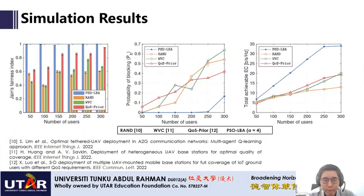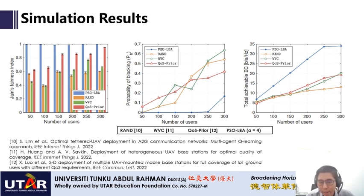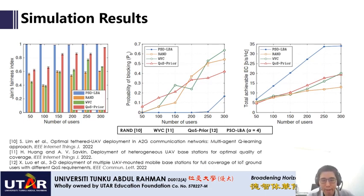The results achieved by particle swarm optimization for load balancing, compared with the same state-of-the-art techniques and the same performance metrics as the previous study, show that particle swarm optimization outperforms the state-of-the-art schemes. Particle swarm optimization achieves better effective capacity because it designates the load of each aerial base station as the effective capacity achieved by the aerial base station.